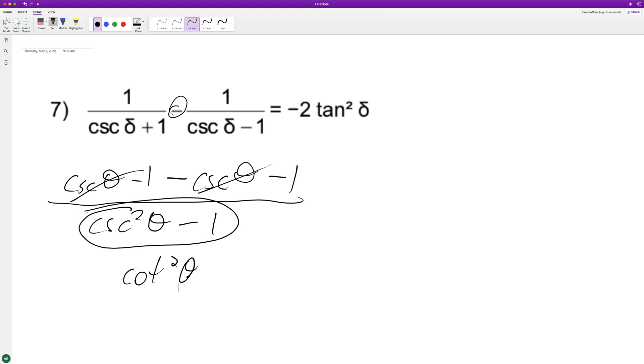So we get negative two over cotangent, and when you divide by cotangent it's the same thing as the tangent. So we end up with negative two tangent squared theta, and that's it.